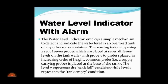The sensing is done by using a set of 7 probes which are placed at 7 different levels on the tank walls. With probe 7 to probe 1 placed in increasing order of height, a common supply-carrying probe is placed at the base of the tank. Level 7 represents the tank full condition while level 1 represents the tank empty condition.